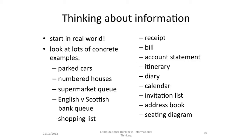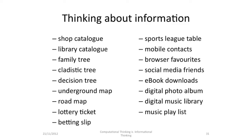What we need to do is start in the real world and think about lots and lots of concrete examples — we're surrounded by information structures. Think about finding a parked car and how that's different to delivering a letter to a numbered house. Think about how a supermarket queue differs from a bank queue, and how an English queue differs from a Scottish queue in a bank. Think about how a shopping list differs from a receipt or a bill or an account statement. Think about how an itinerary differs from a diary or a calendar. Think about how an invitation list, an address book and a seating diagram are different. A shop catalogue, a library catalogue, a family tree showing inheritance, a cladistic tree showing difference, a decision tree showing options, an underground map or a road map showing distances, a lottery ticket and a betting slip, a sports league table, mobile contacts, browser favourites, social media friends, e-book downloads, digital photo albums, digital music libraries and music playlists — these are all information structures.